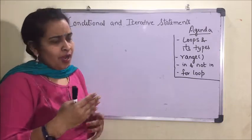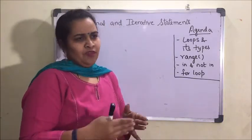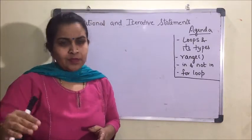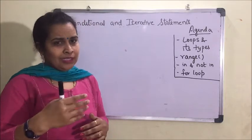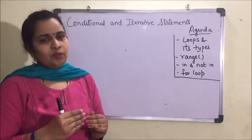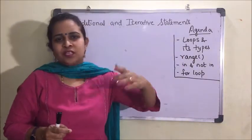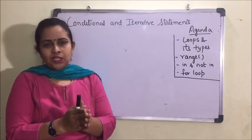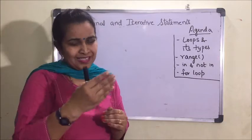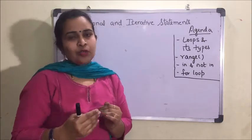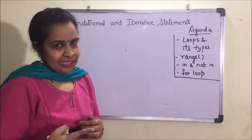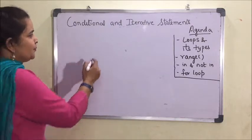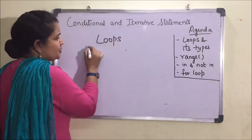Suppose I want to print my name five or six times — we can directly use the print command five, six, or seven times. But if we want to print it a hundred or a thousand times, we can use a looping system in which that particular print statement will be executed five hundred, a thousand, or ten thousand times. Iteration is a process which helps you execute any statement or set of statements multiple times — that is also known as a loop.